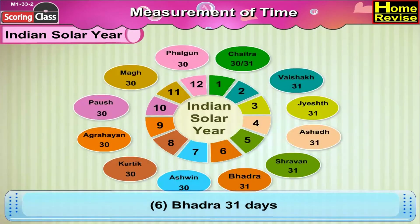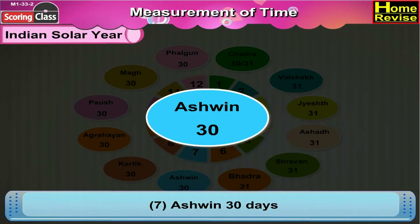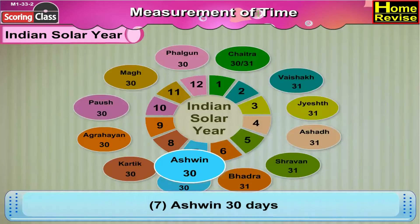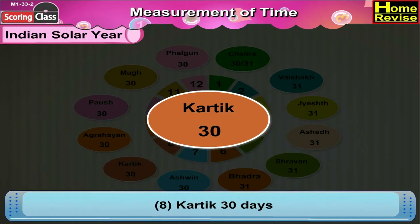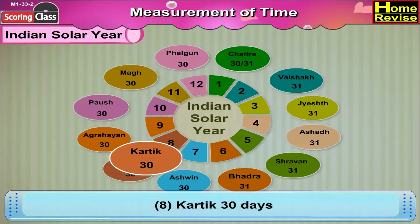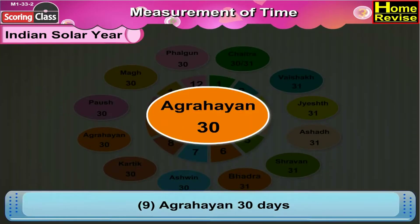The seventh month is Ashwin, which has 30 days. The eighth month is Karthik, with 30 days. The ninth month is Agrahaen, which has 30 days.